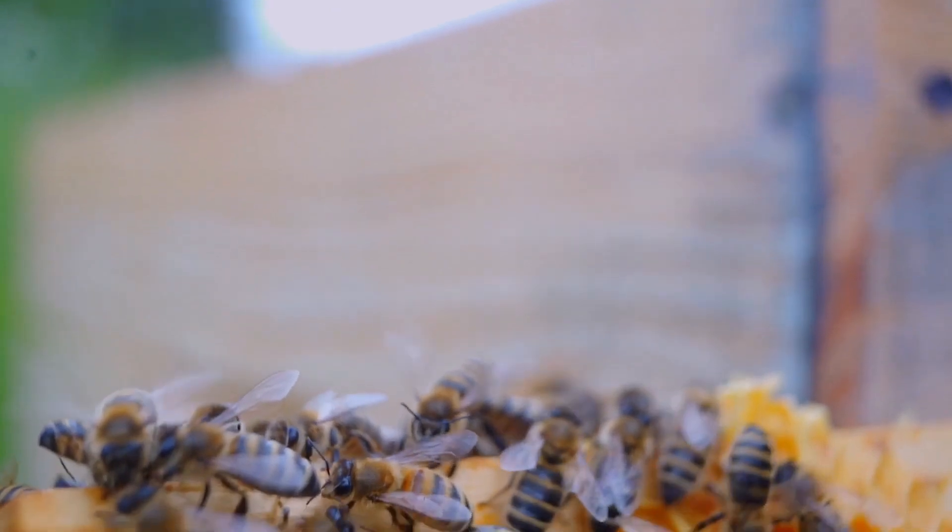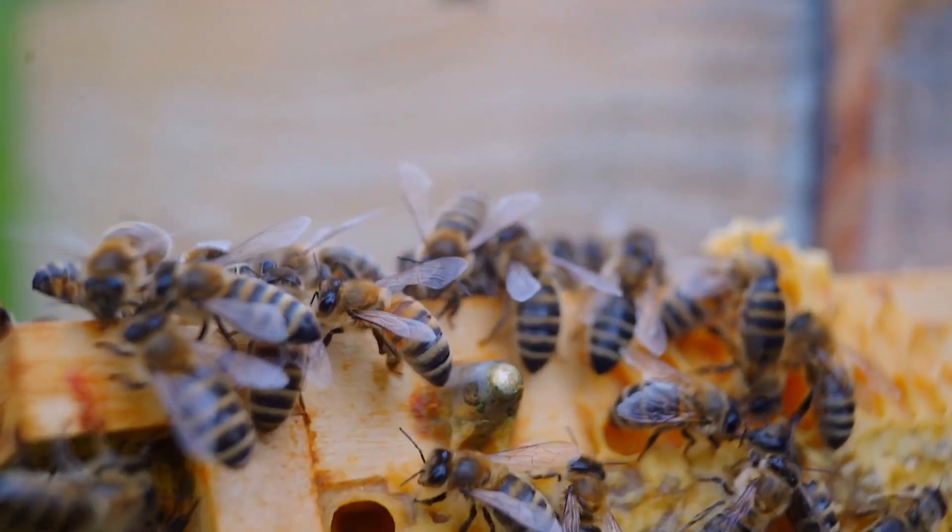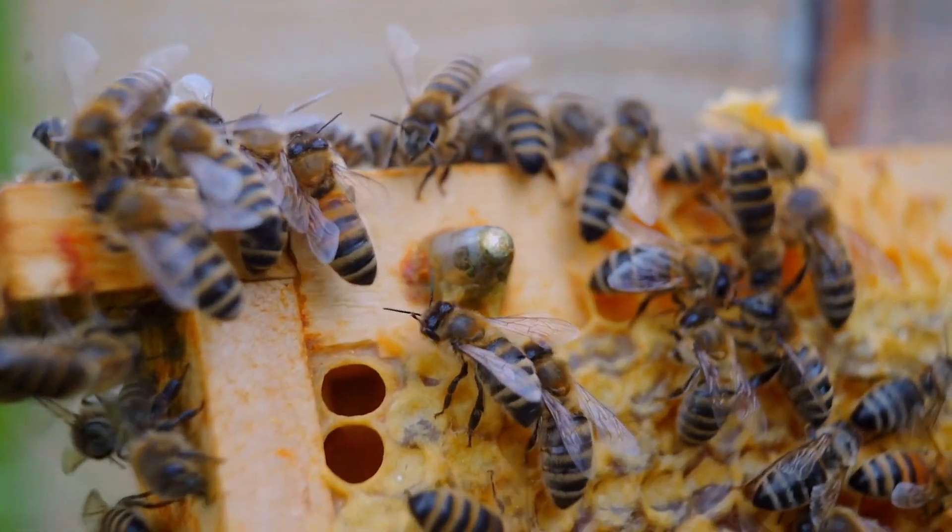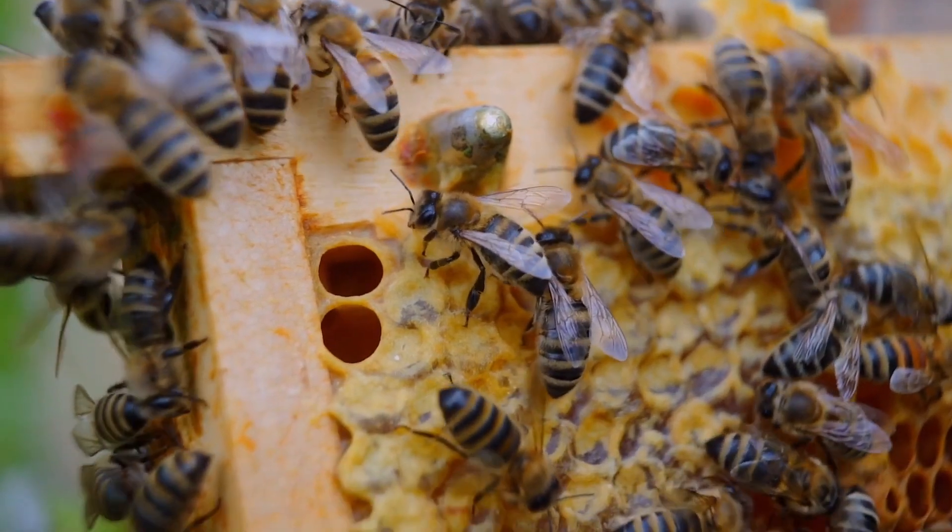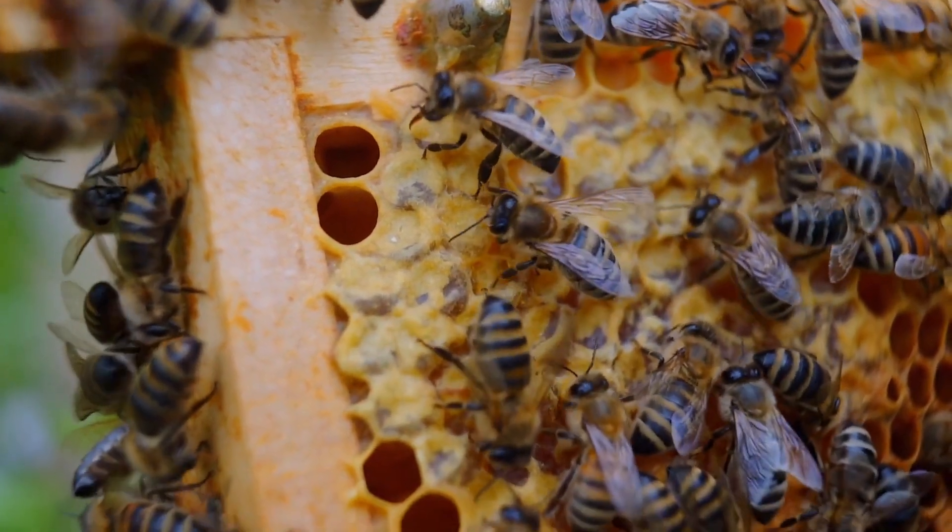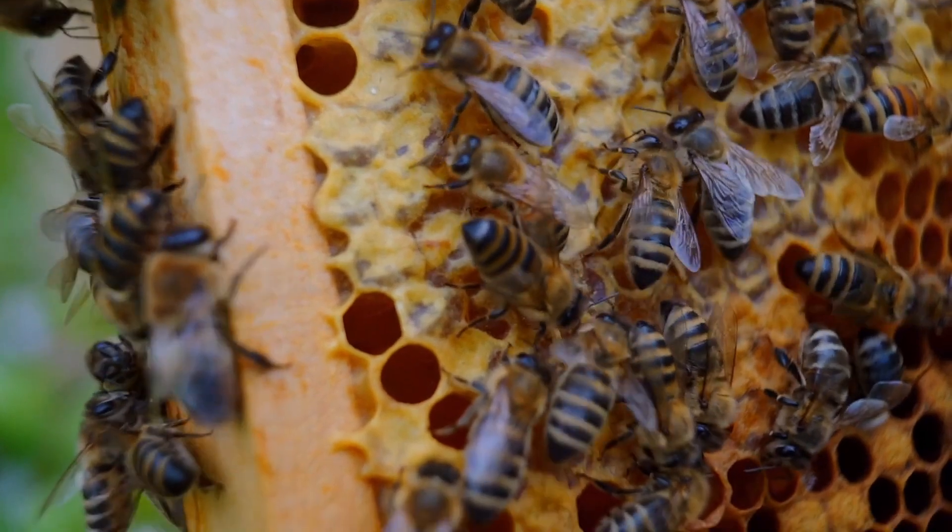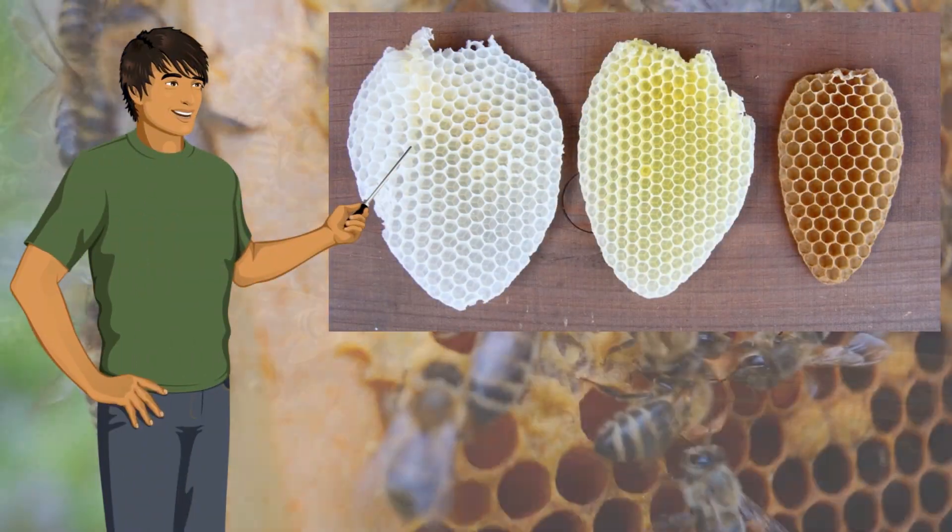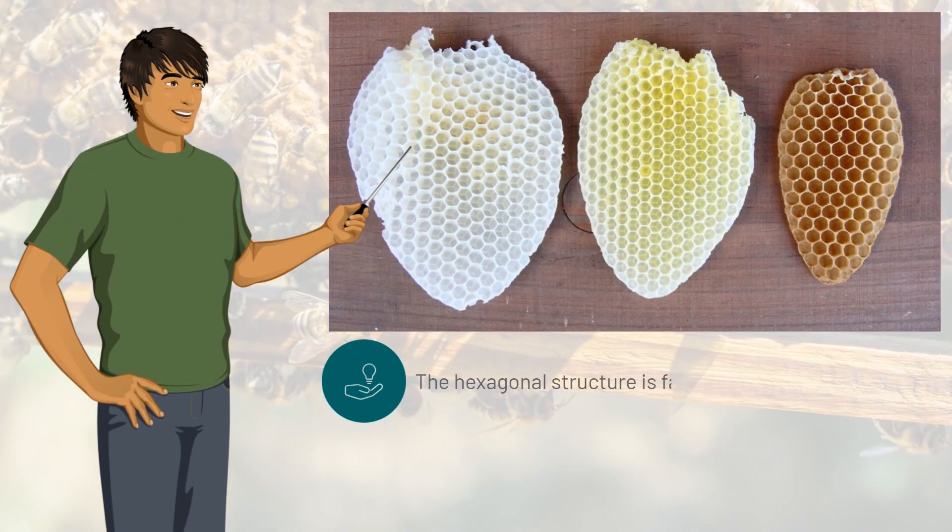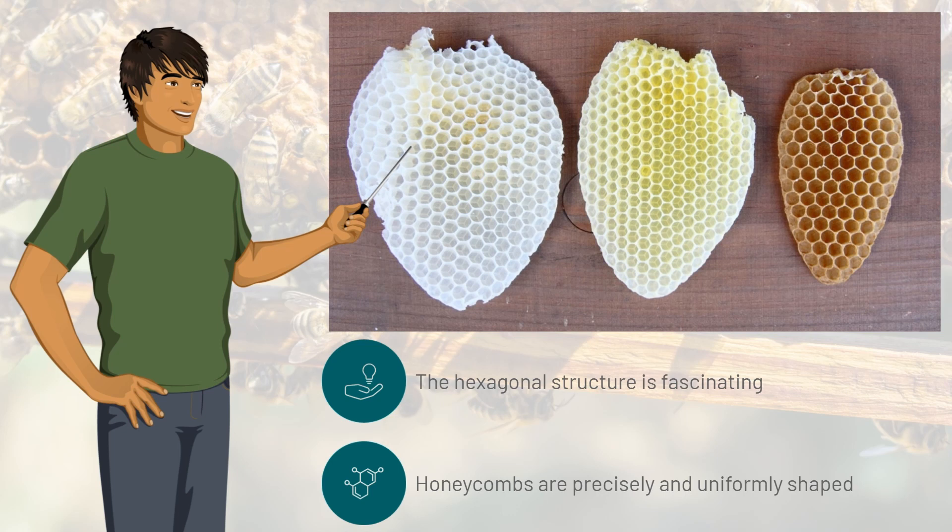The best example of perfect shaping in nature are the honeycombs of bees. A characteristic feature are the perfectly shaped hexagonal cells, which together form this homogenous honeycomb pattern. The hexagonal structure of honeycombs has fascinated natural scientists for hundreds of years. They are precisely and uniformly shaped, showing how perfect lightweight construction works.